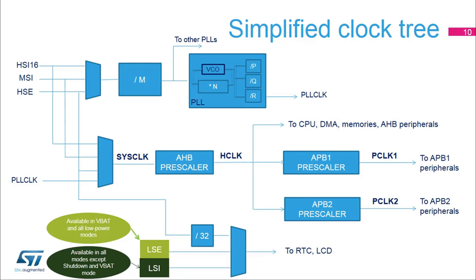The RTC and LCD clock is generated by the LSE, the LSI, or the HSE divided by 32. The LSE can remain enabled in all low-power modes and in VBAT mode. The LSI can remain enabled in all modes except shutdown and VBAT modes.